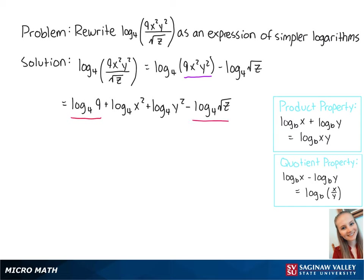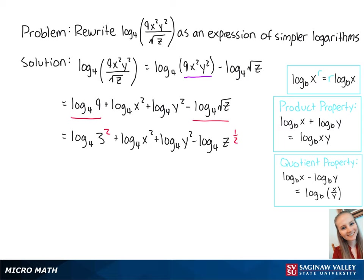We can take a closer look at these two logs to further rewrite this as the log base 4 of 3 squared plus the log base 4 of x squared plus the log base 4 of y squared minus the log base 4 of z to the one-half power. Now, we can use this last property to bring down all of the exponents.